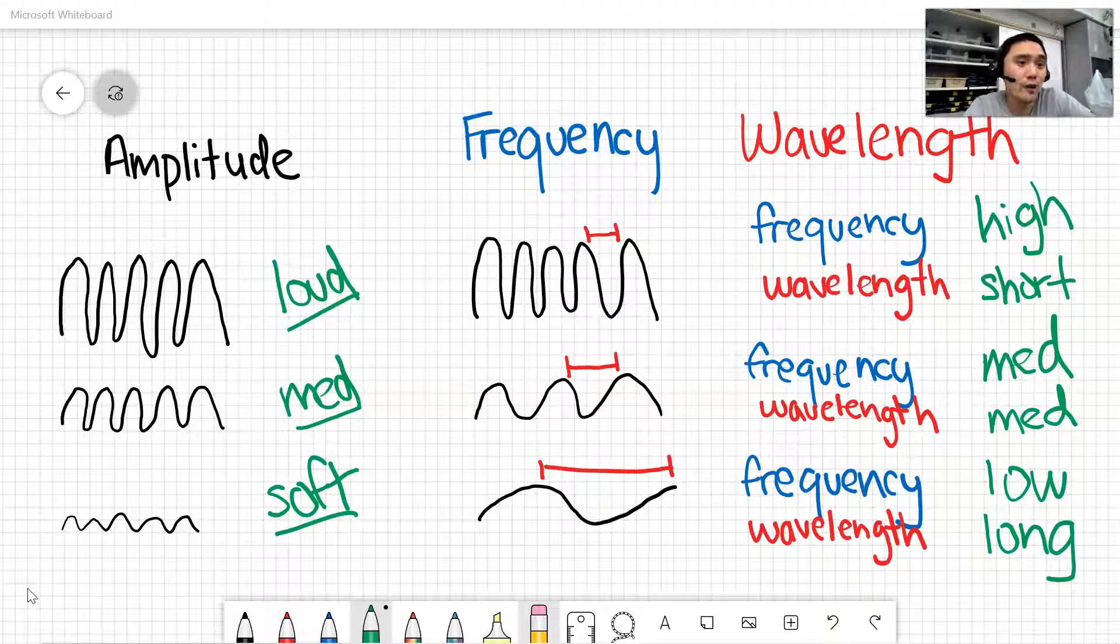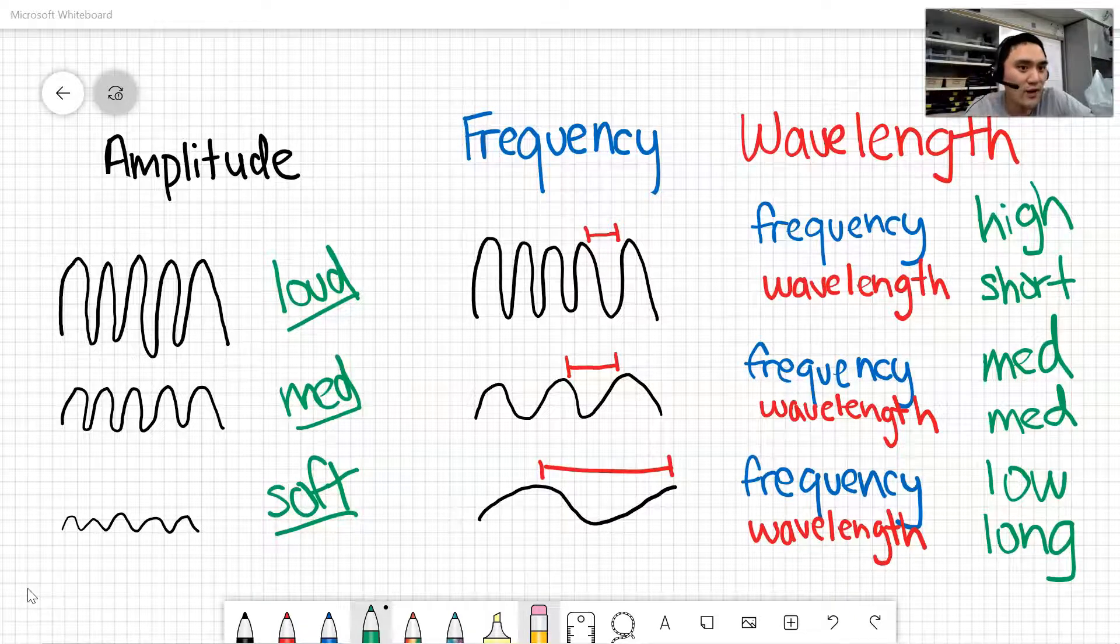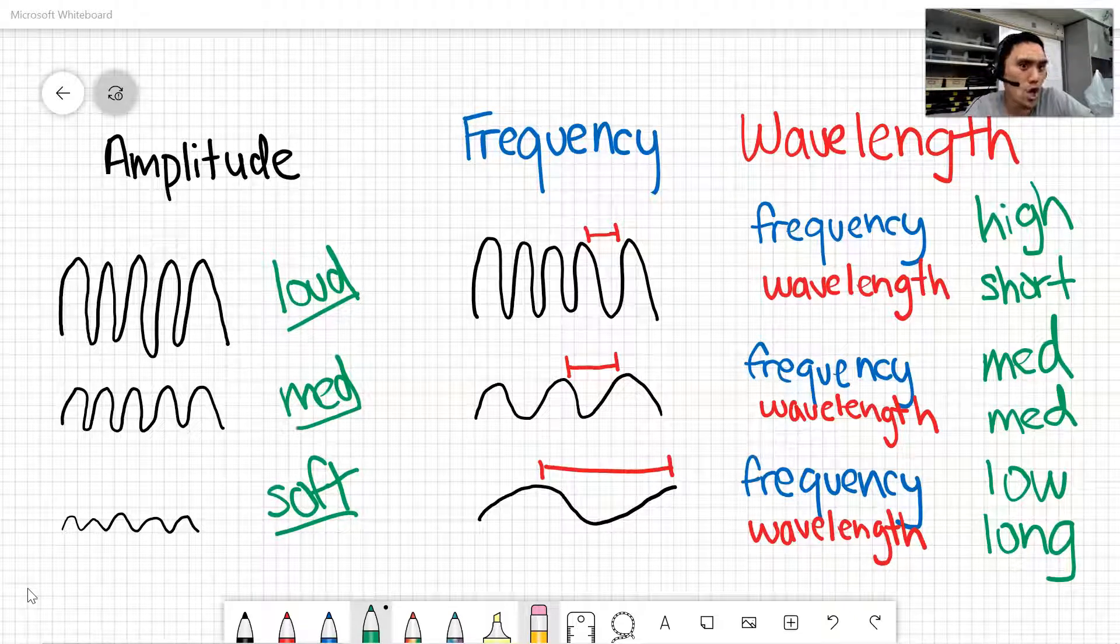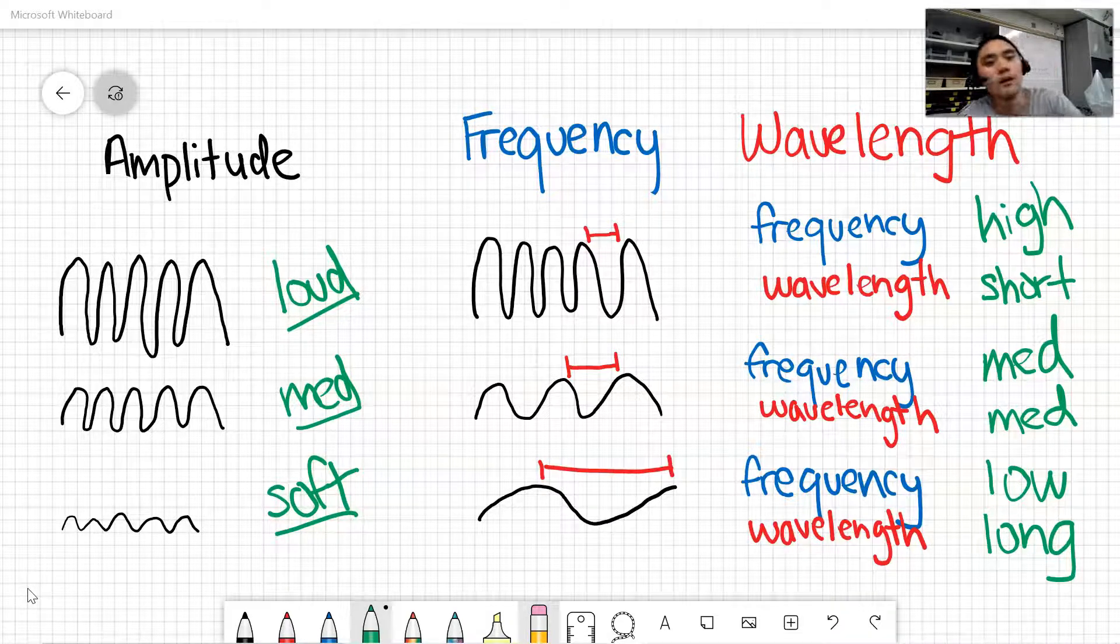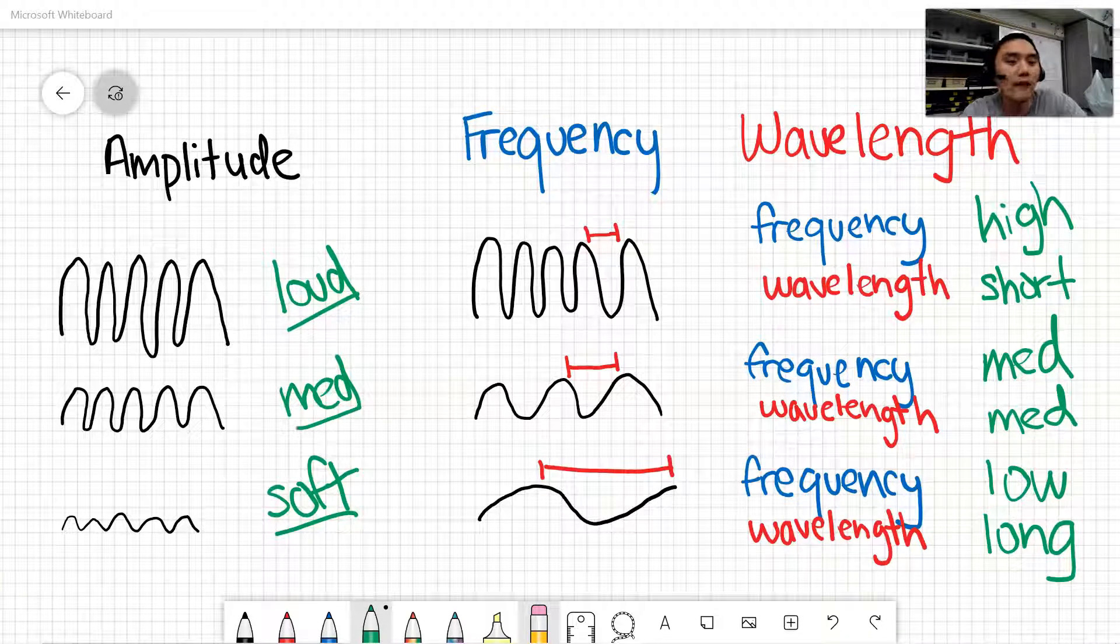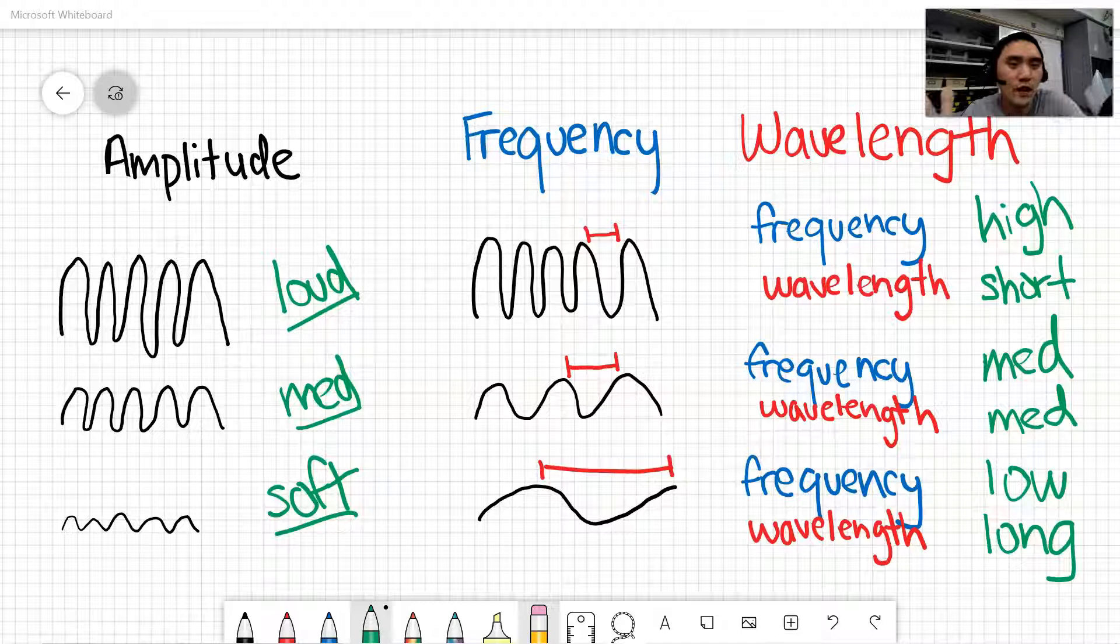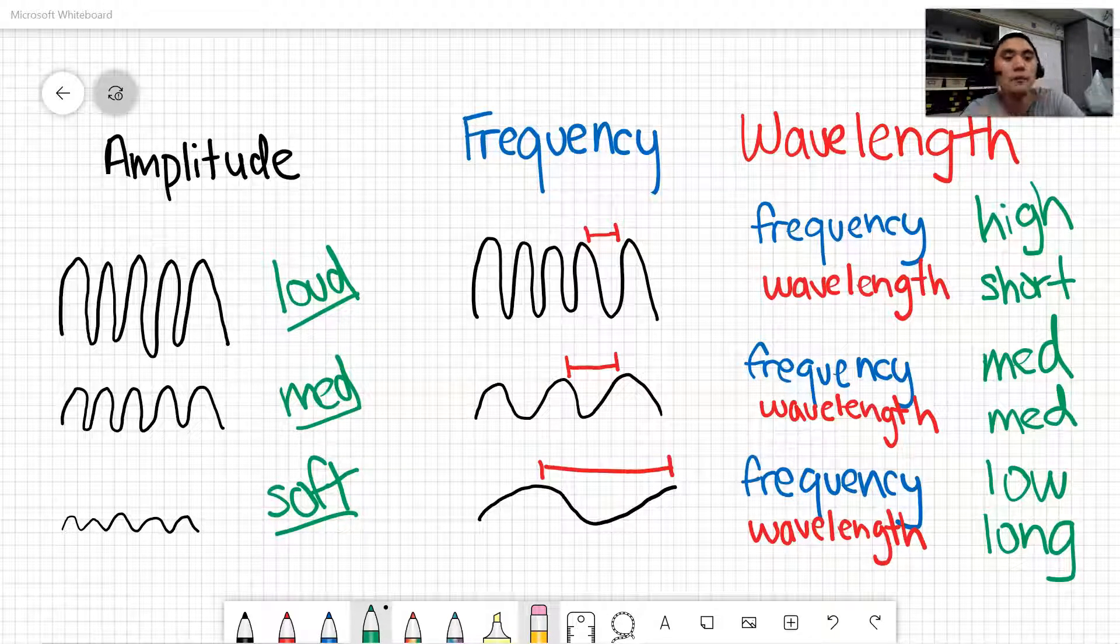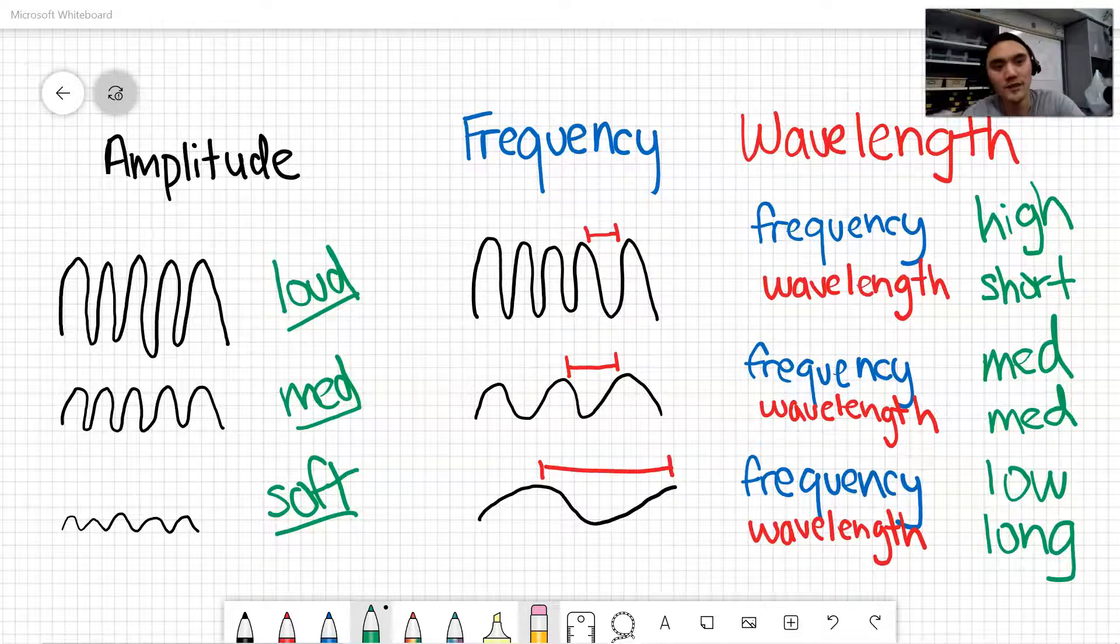So if you have a high frequency, that doesn't mean it's about the volume. It actually means about the pitch. So that means you're talking at a very high pitch. But on the flip side, the wavelength or the space in between the waves for the tip of the waves will be very small. So if you have a high frequency, the wavelength will be short.